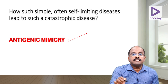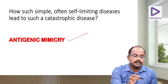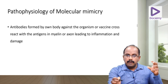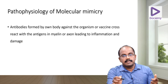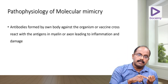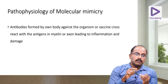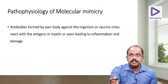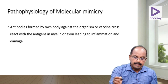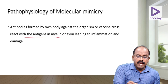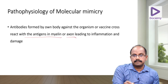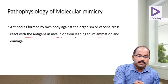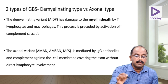The mechanism is called antigenic mimicry — the same concept used in rheumatic fever. Antibodies formed against the organism or vaccine cross-react with antigens in the myelin or axon. This cross-reaction leads to inflammation and damage of the nerves. This phenomenon is called antigenic mimicry.